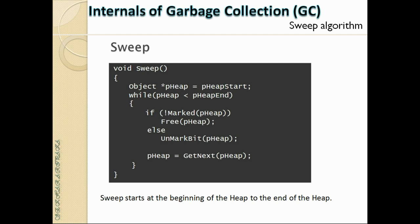The sweep algorithm starts from the first address in the heap — the heap start point — and iterates through to the end, scanning all objects. For each object: if it is not marked, the heap memory is freed (reclaimed). If it is marked, the mark bit is unset. It then moves to the next heap segment and repeats the same process.